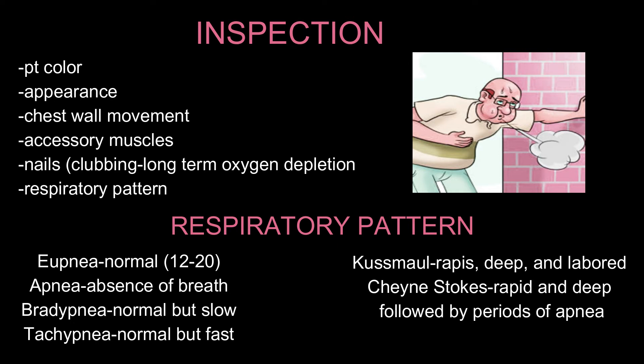Kussmaul respirations are rapid, deep, and labored. They're usually found in DKA patients, metabolic acidosis, or even renal failure. And the last one is Cheyne-Stokes, which is rapid and deep breathing followed by a period of apnea. Cheyne-Stokes is usually found with head injuries, strokes, or overdoses.